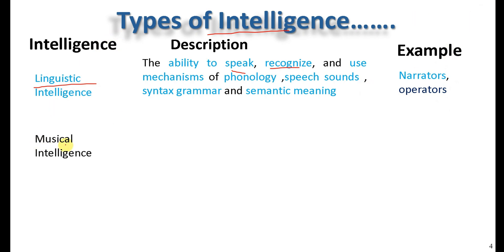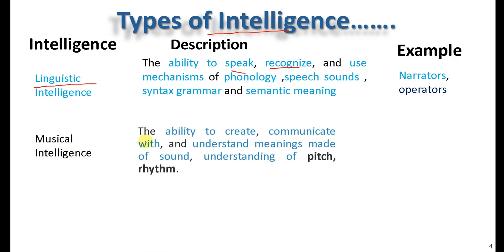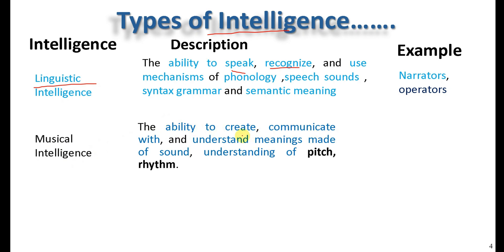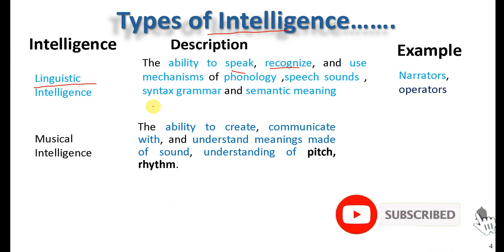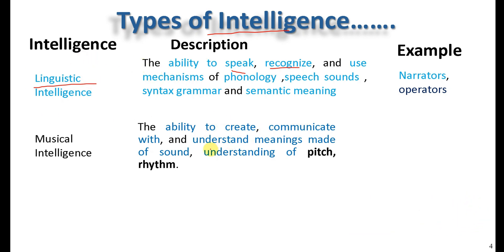A third type of intelligence is musical intelligence. It is a system that has the ability to create your mind, communicate your mind, understand your mind, and understand more picture in the rhythm. Musicians, singers, and composers are some examples of musical intelligence.